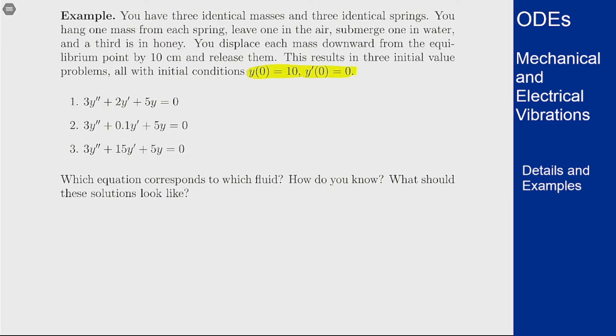And we get these three equations. 3y double prime plus 2y prime plus 5y is zero. 3y double prime plus 0.1y prime plus 5y equals zero, and 3y double prime plus 15y prime plus 5y equals zero.